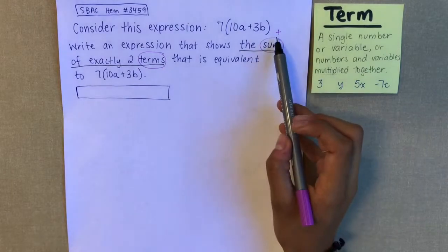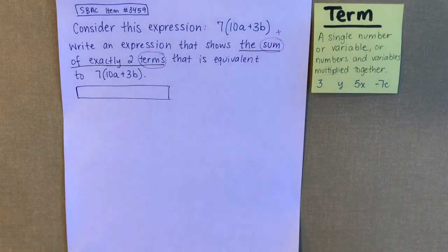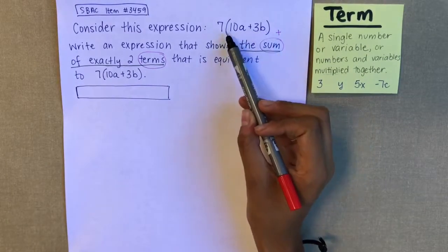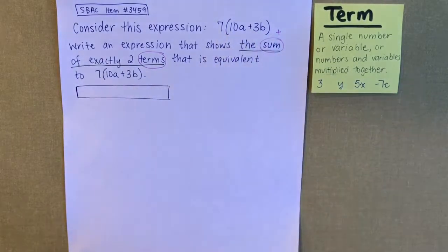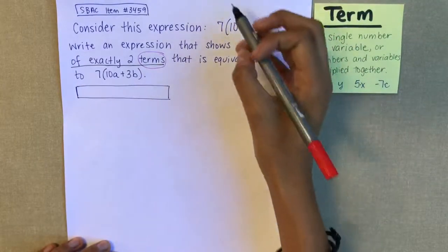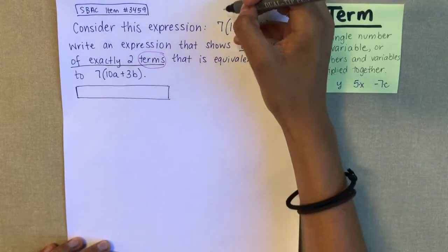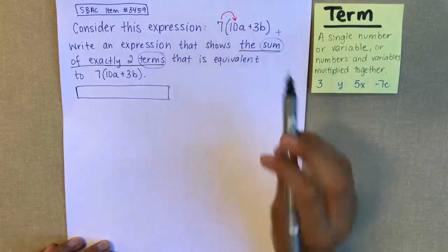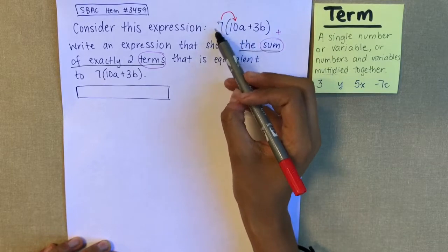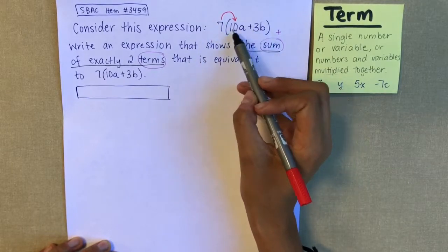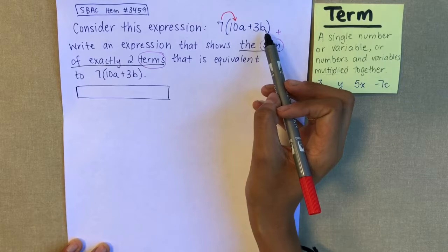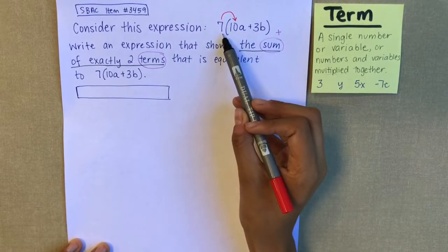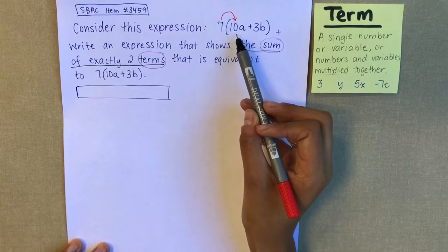I need to have two terms that I'm adding together. When I look at this expression, 7 times 10a plus 3b, I can see that it requires the distributive property. With the distributive property, you're multiplying the number outside the parentheses by however many terms are inside. Because really, this is 10a plus 3b repeated seven times: 10a plus 10a... seven times, and 3b seven times.